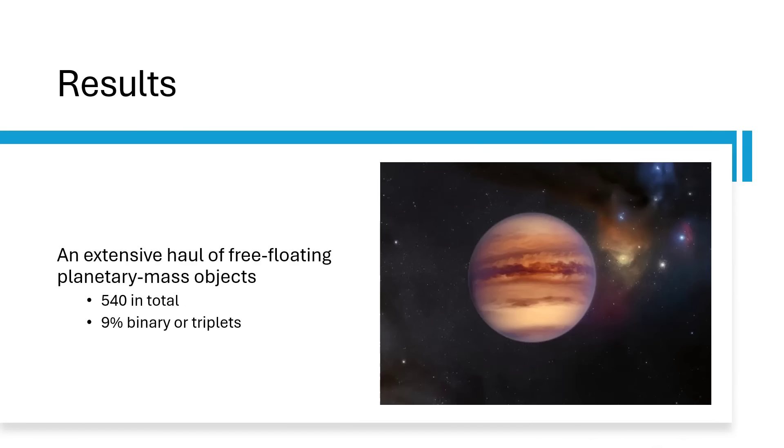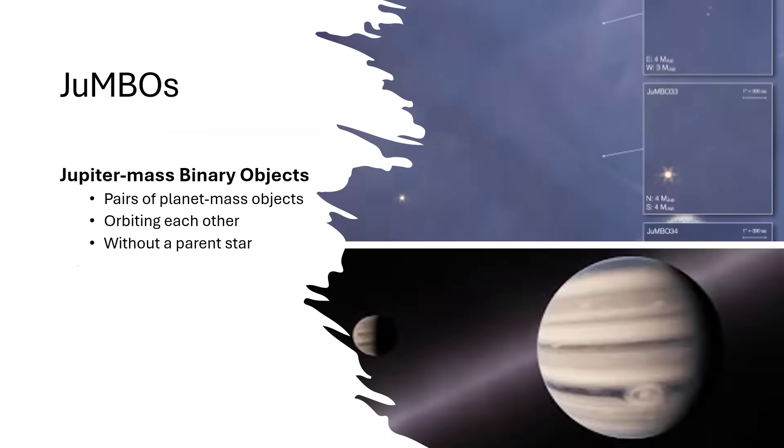Interestingly of those 540, 9% of them were binaries or triplets. The numbers were 40 binaries and two triplets. The binaries go by the name of Jupiter Mass Binary Objects or JUMBOs. These are pairs of planet mass objects in orbit around each other with no parent star.